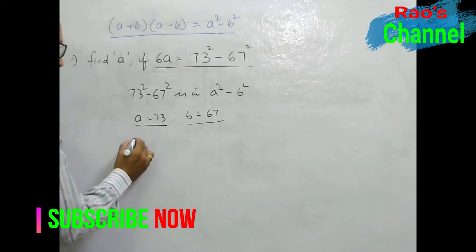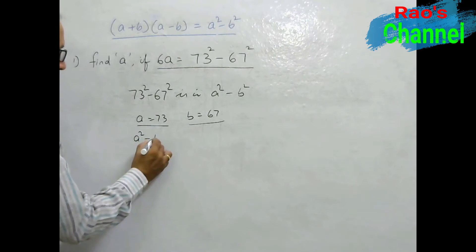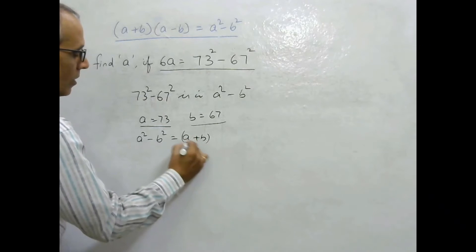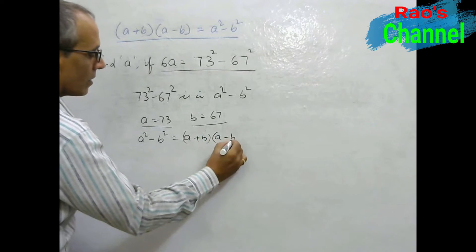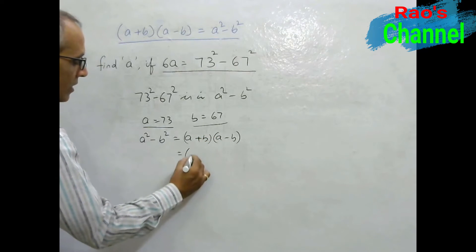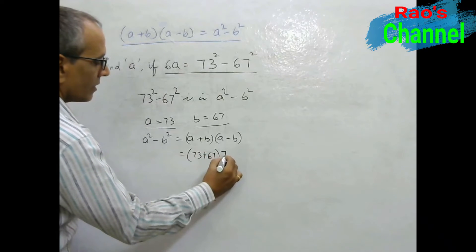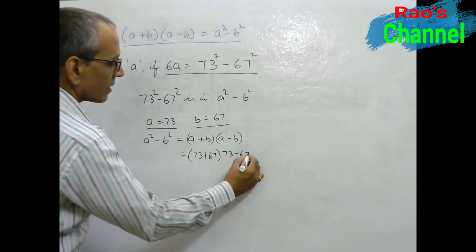So write the identity in reverse order now. A square minus B square is equal to A plus B of A minus B. Clear? So here A for 73 plus 67 and 73 minus 67.